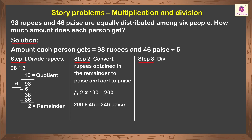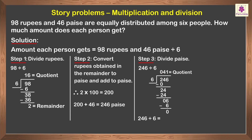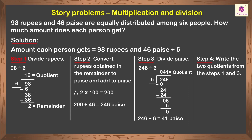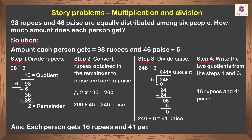Step 3: Divide paise. On dividing 246 paise by 6, we get the quotient as 41 paise. Lastly, Step 4: Write the two quotients from steps 1 and 3. So, we get the answer as 16 rupees and 41 paise. Thus, each person gets 16 rupees and 41 paise.